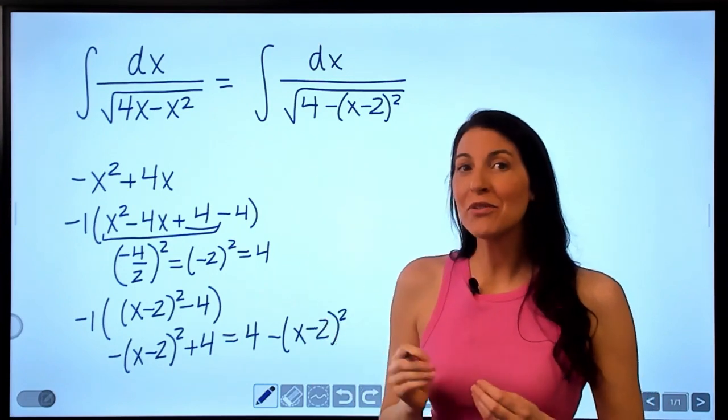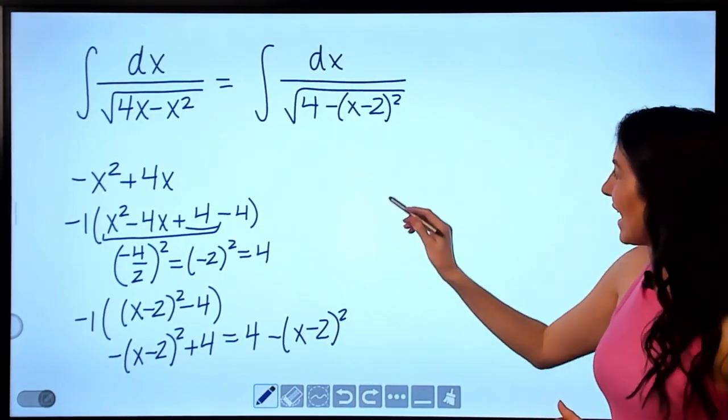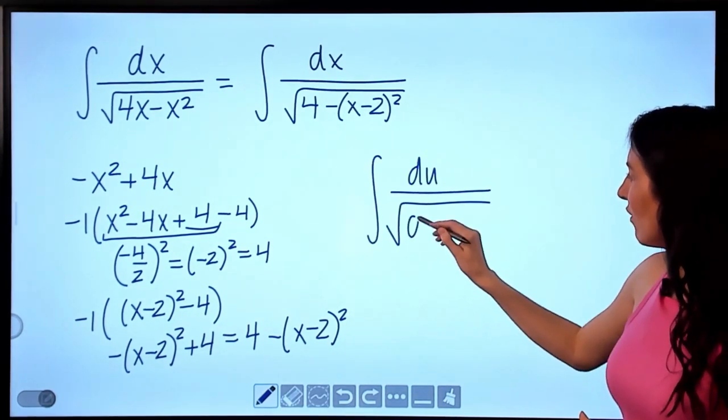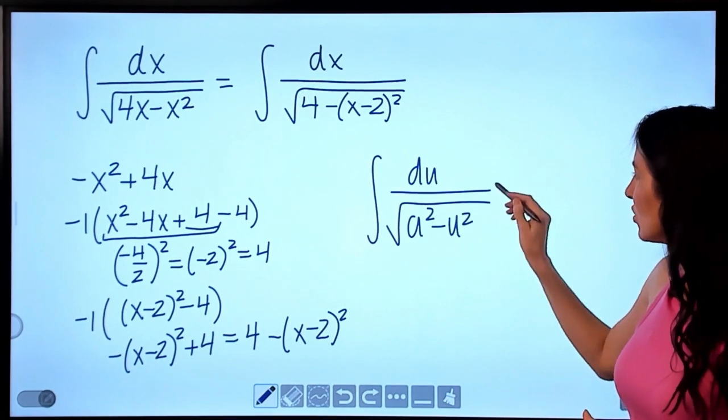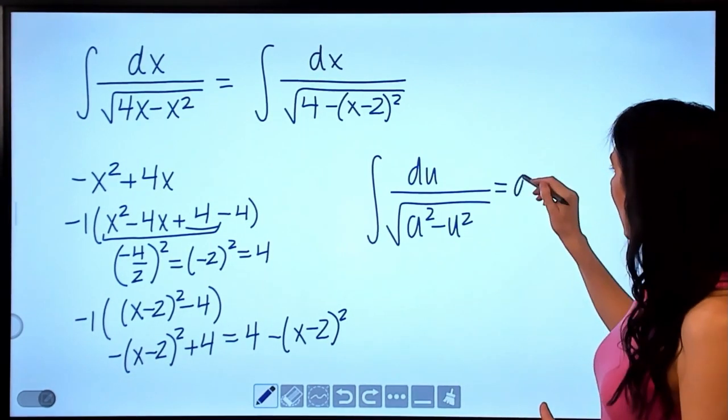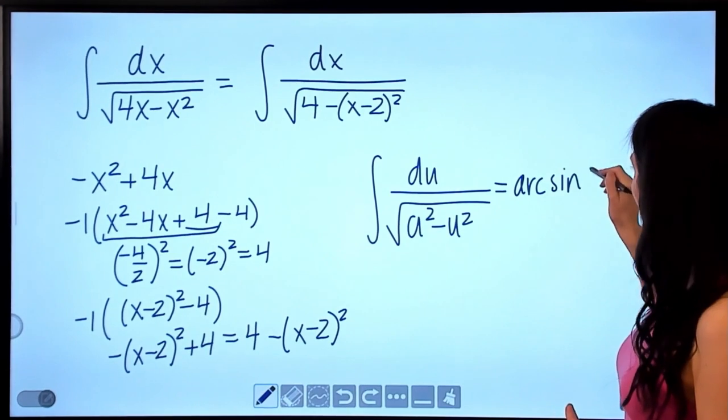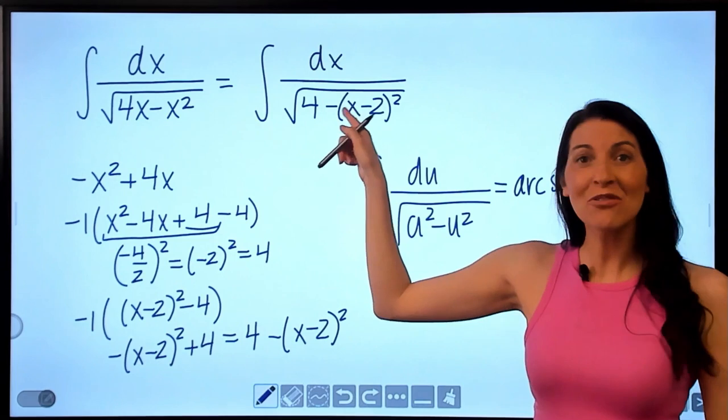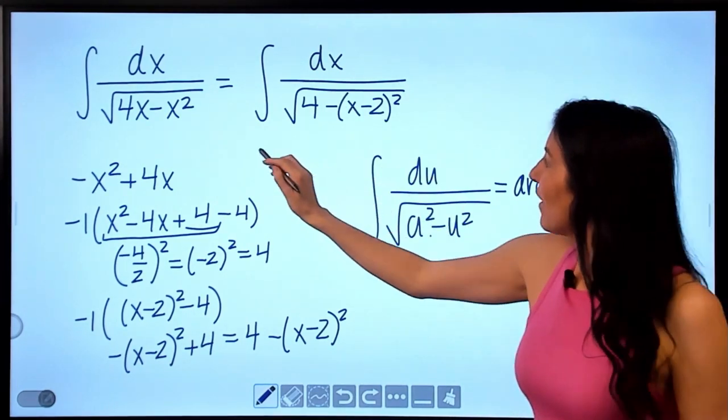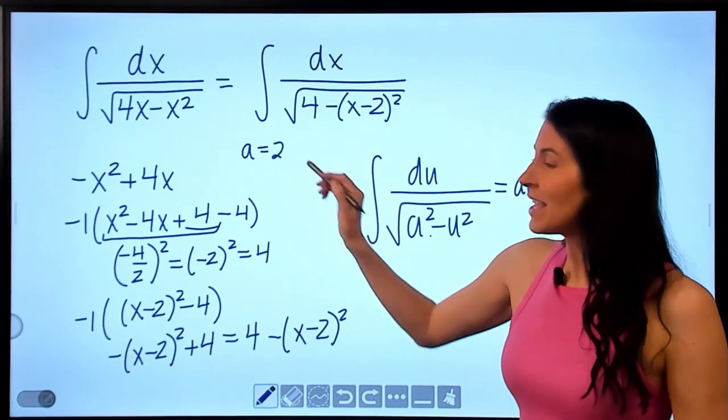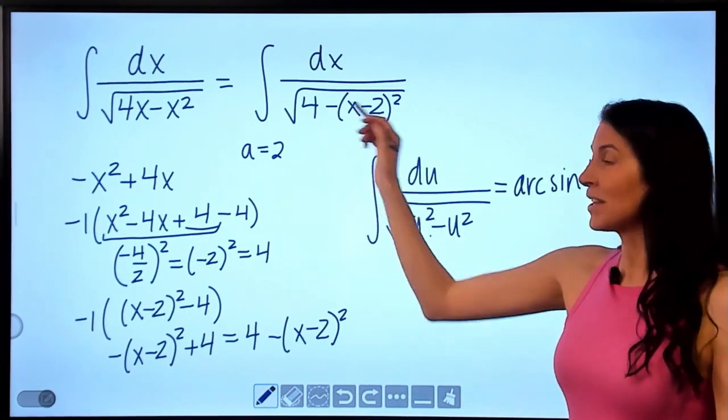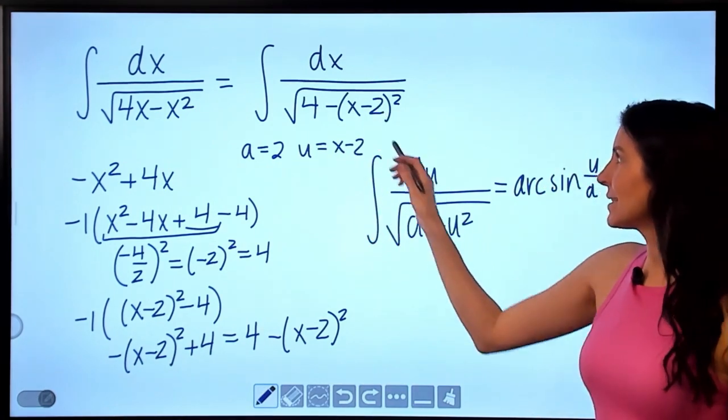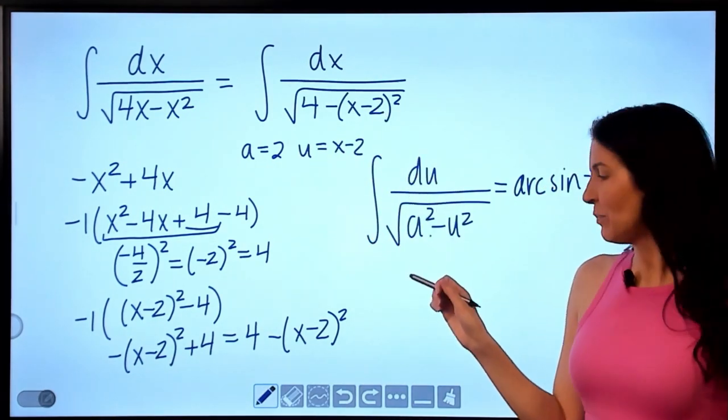So if you can write an integral in the form of du divided by the square root of a squared minus u squared, this is going to equal arc sine of u divided by a plus c. And I can see that I can write this in this form if I make a be equal to 2, because then we can see 2 squared would give us 4. And then u is going to be x minus 2, because then I can see x minus 2 squared would in fact be u squared.